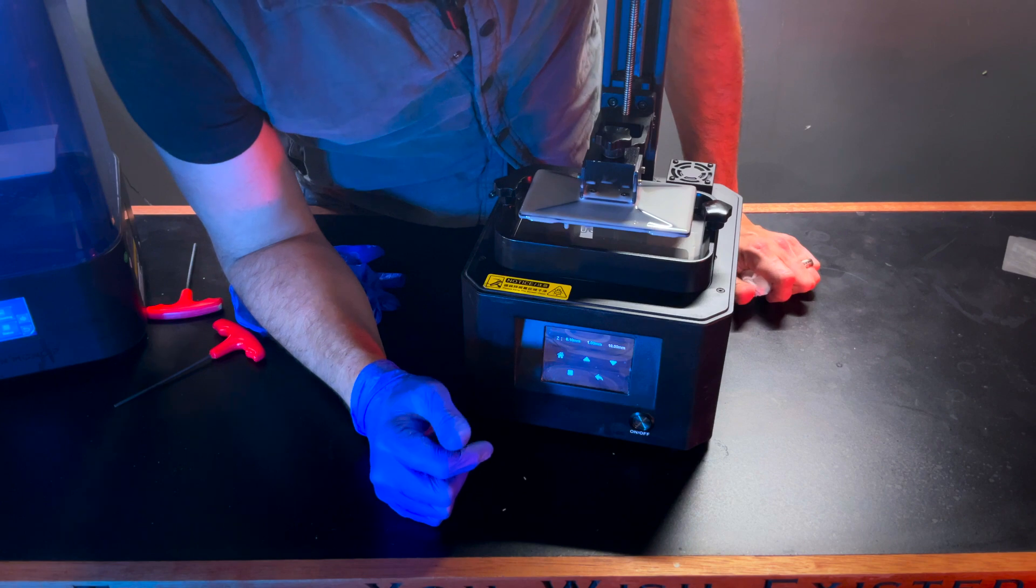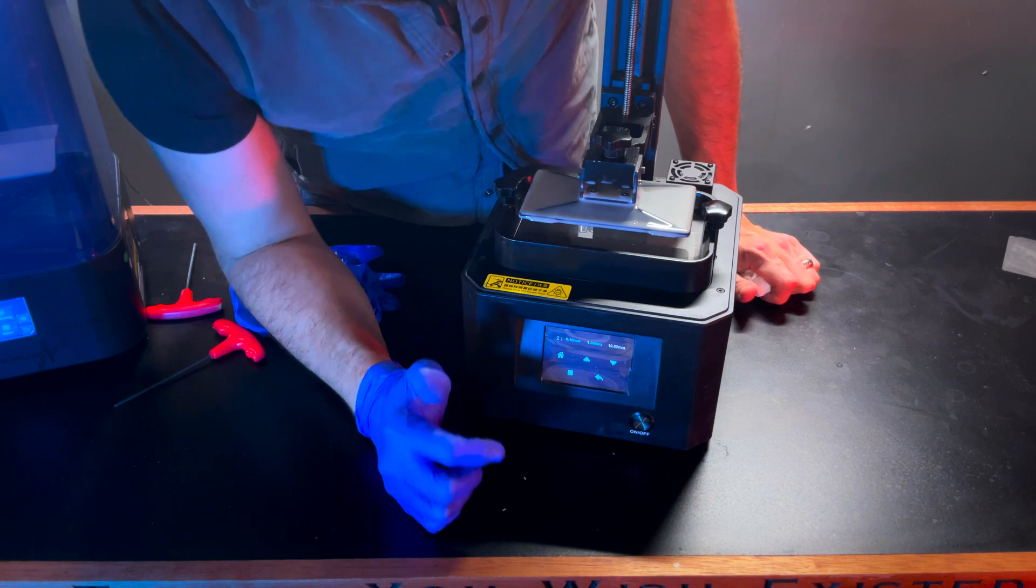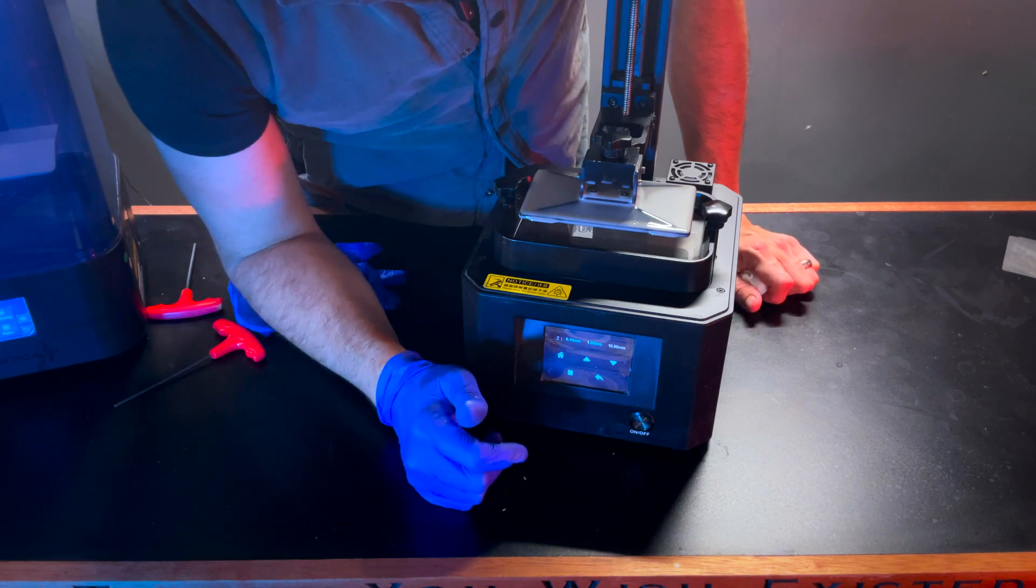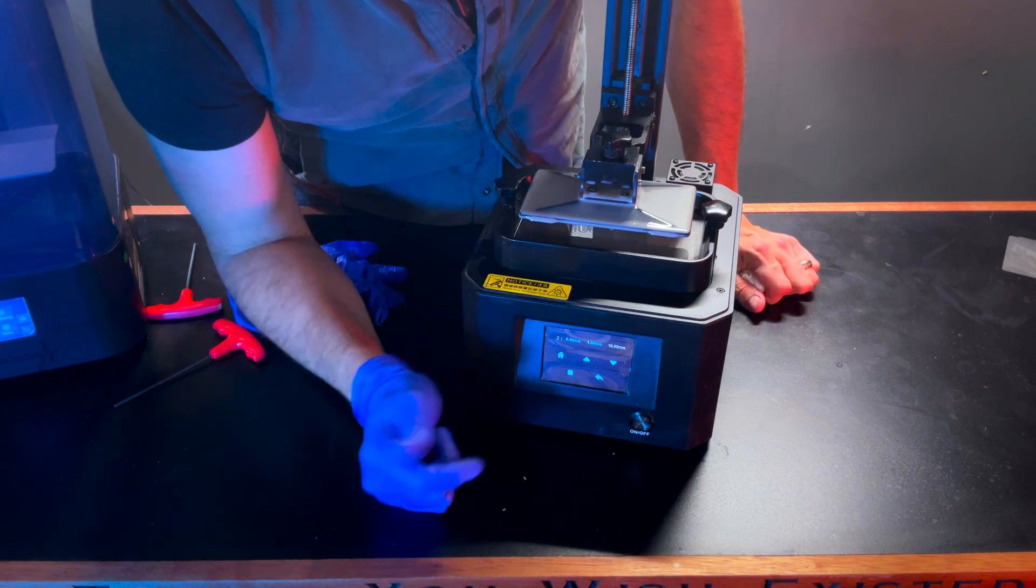Another pro tip guys, if you've got resin on your build plate and you're just raising it up, let it sit low for a little while. That way you don't get the splash from the resin while this is draining the resin back into the vat.